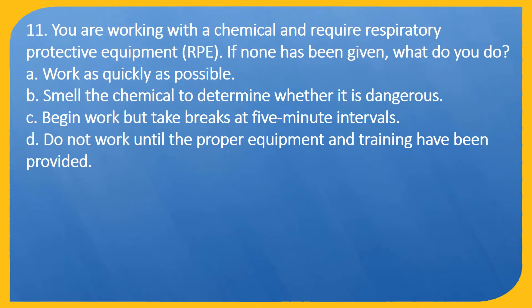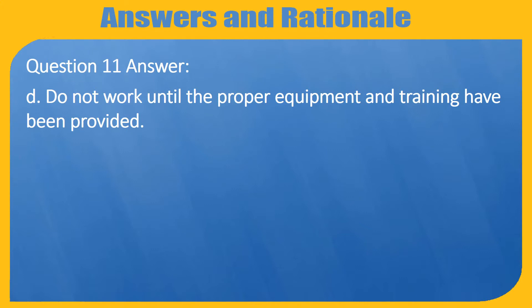Question 11. You are working with a chemical and require respiratory protective equipment (RPE). If none has been given, what do you do? A. Work as quickly as possible. B. Smell the chemical to determine whether it is dangerous. C. Begin work but take breaks at 5-minute intervals. D. Do not work until the proper equipment and training have been provided. Question 11. Answer D: Do not work until the proper equipment and training have been provided.